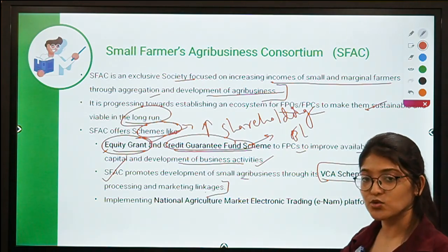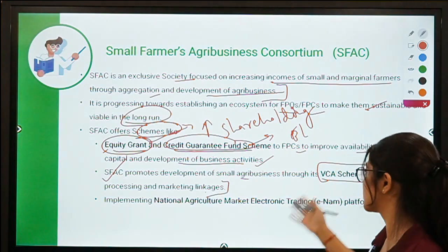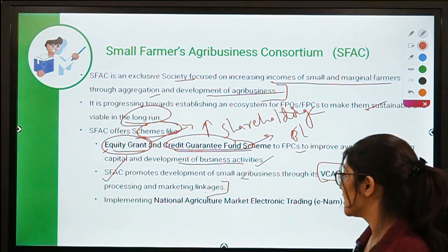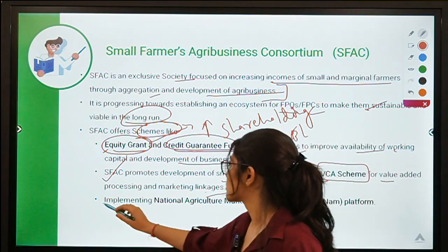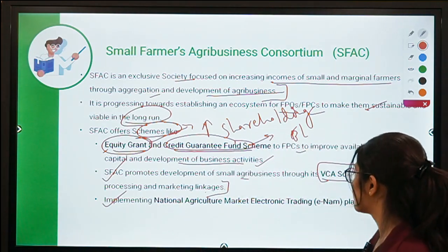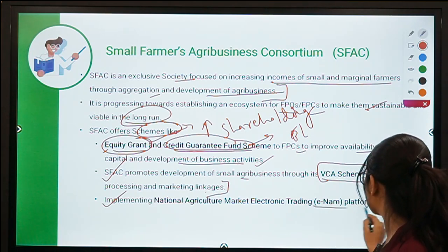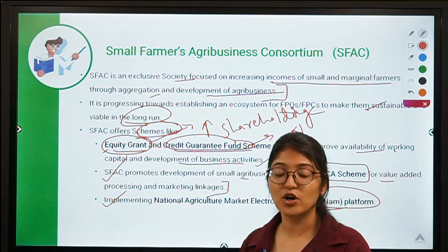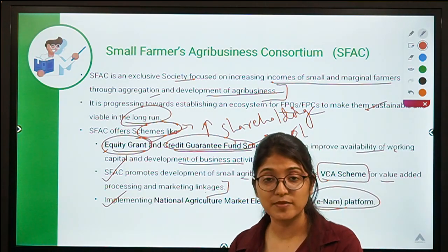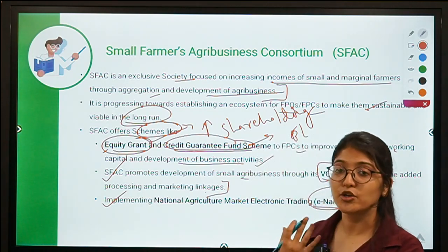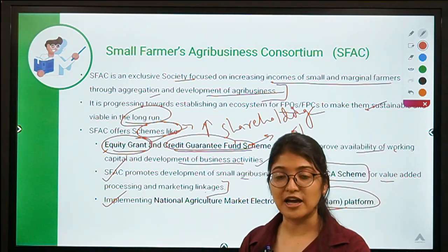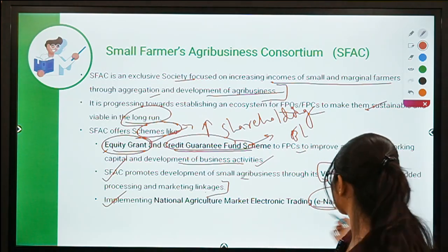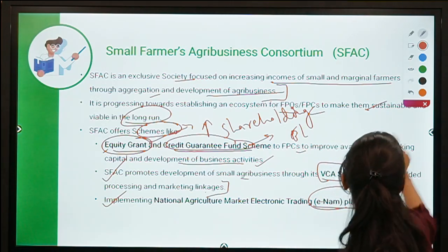When implementing a project, if you have a capital requirement, that is fulfilled through the VCA scheme. SFAC is also implementing the National Agriculture Market electronic trading platform — the eNAM platform — which is basically a unified electronic platform for agricultural products.